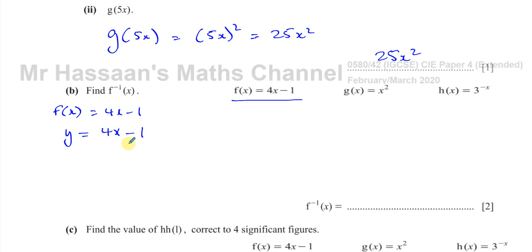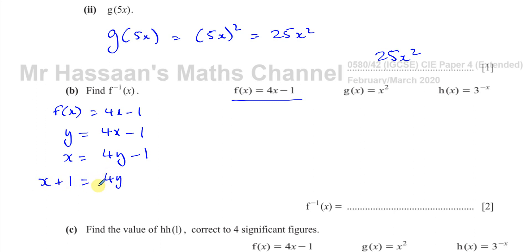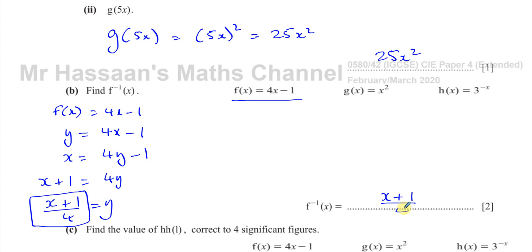Then what you do is you replace the y with x and replace the x with y — not rearranging yet, just swapping: wherever you see y, call it x; wherever you see x, call it y. Then you make y the subject of this formula. To do that, add 1 to both sides to get rid of the negative 1, then divide both sides by 4. You end up with x plus 1 divided by 4 equals y. This is the inverse function.